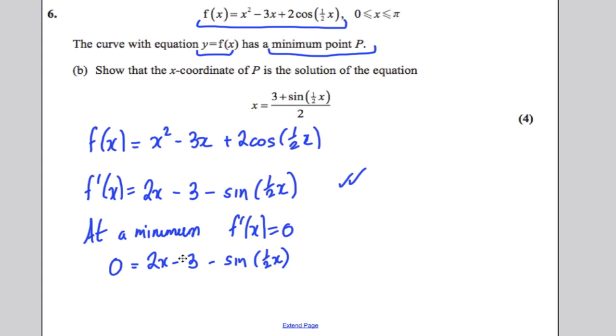And now we're just going to rearrange this to get it looking in this form. Simple as that. So let's just add 3 plus sine of a half x to both sides. We would get that 2x is equal to 3 plus sine of a half x. And then dividing both sides by 2, I would get x is 3 plus sine of a half x over 2.